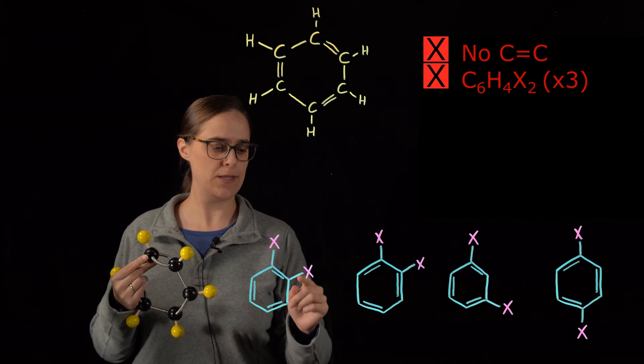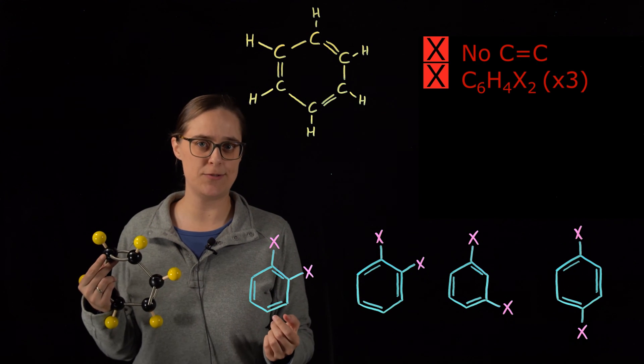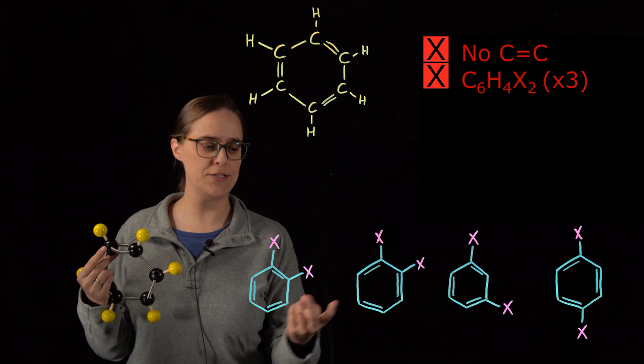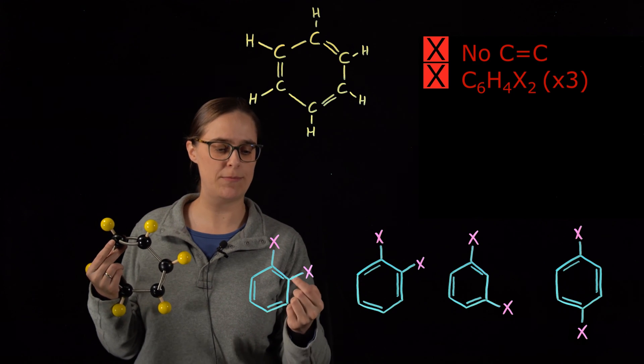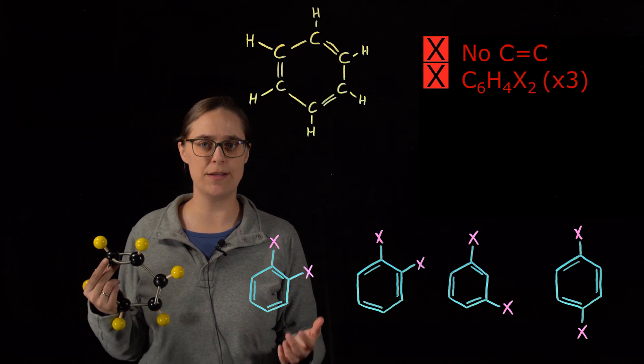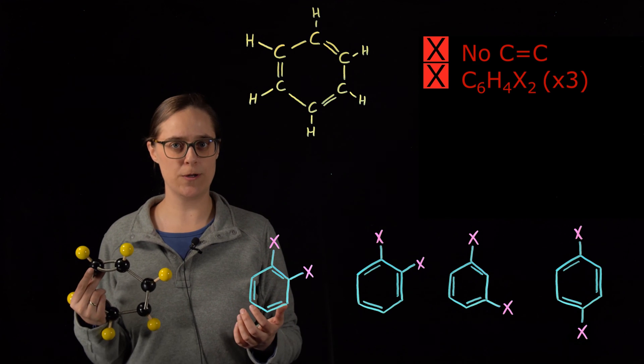Kekulé did propose that we just couldn't tell the difference between these two structures. They both have halogens on neighboring carbons, just separated by double bond versus single bond, but a lot of people still weren't convinced.